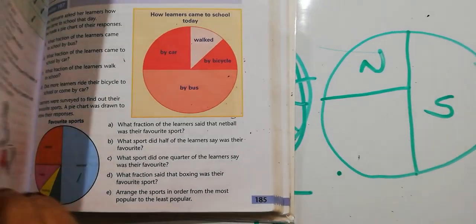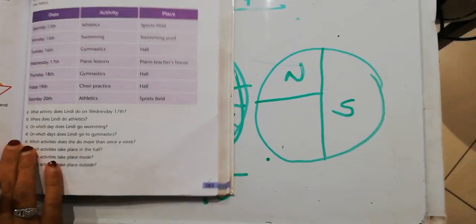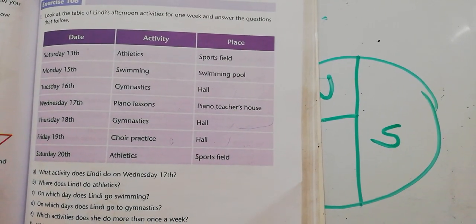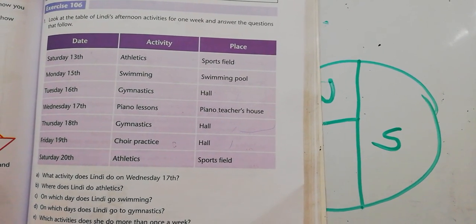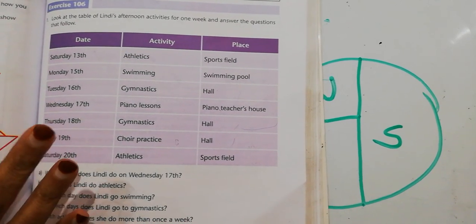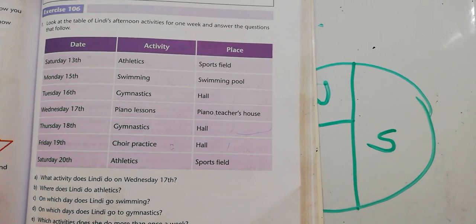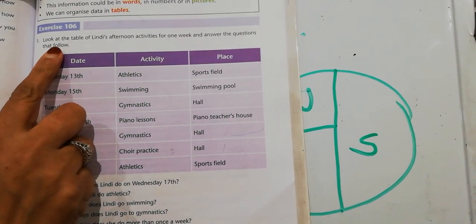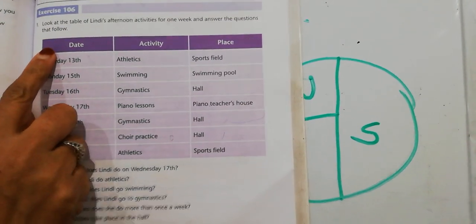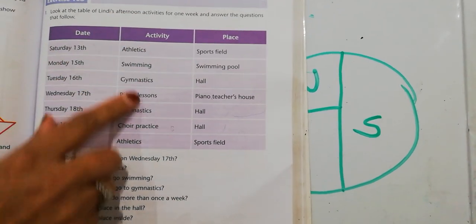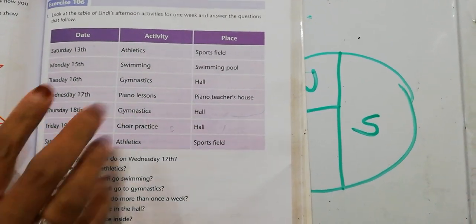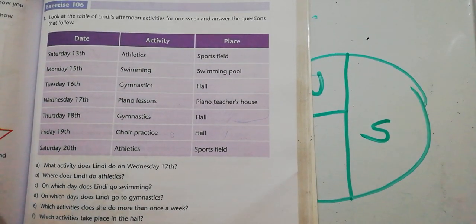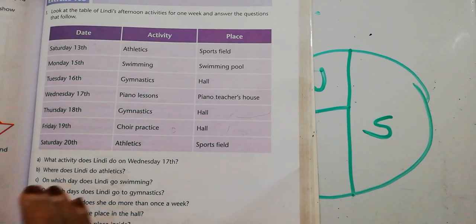That's all for pie graphs. And now we're going to go on to reading information from a table. So this is another kind of a graph. And this information, basically when we look at this information, we must be able to analyze this information.